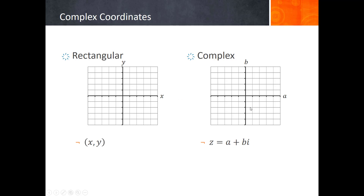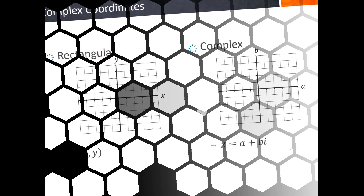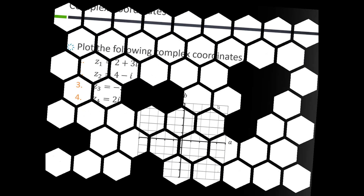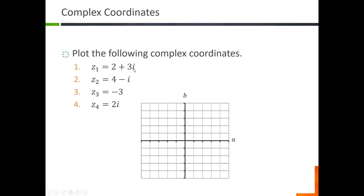If we wanted to plot a point on the complex number plane, we think of A as the X value — the horizontal dimension — and B, the imaginary part, as the Y axis. For example, Z equals two plus three i means we go two units horizontally to the right and three units up, landing at two plus three i. The second example, four minus i, means four units horizontally and one unit down vertically, placing four minus i there.